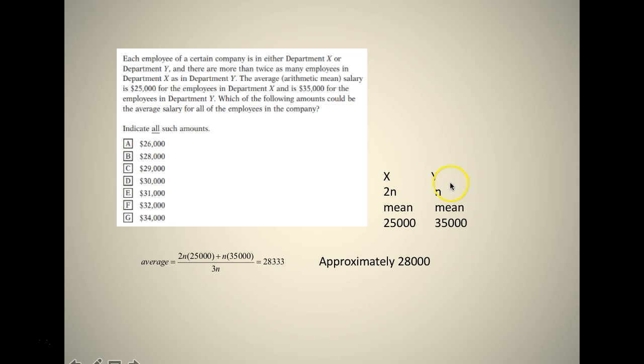So you have X and Y, and there are more than twice as many employees in department X as in department Y. So if Y has n employees, X has 2n employees. Mean is $25,000 for X, $35,000 for Y. So the average would be 2n times 25,000 plus n times 35,000 divided by 3n, which is 28,333. Since 28,333 is not an option, the answer would be approximately 28,000, that is B.